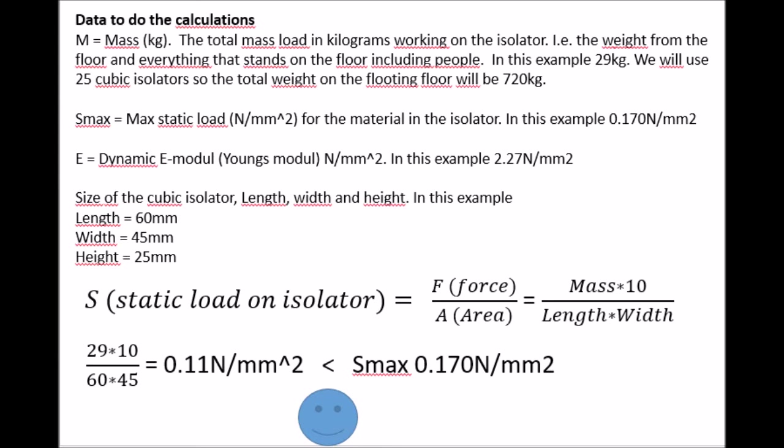Then you have to figure out how much mass you will have on your isolator. It's the weight from the floor and everything that stands on the floor including people. So in this example it's 29 kilograms. And we will use 25 cubic isolators, so the total weight on the floor will be 720 kilograms.